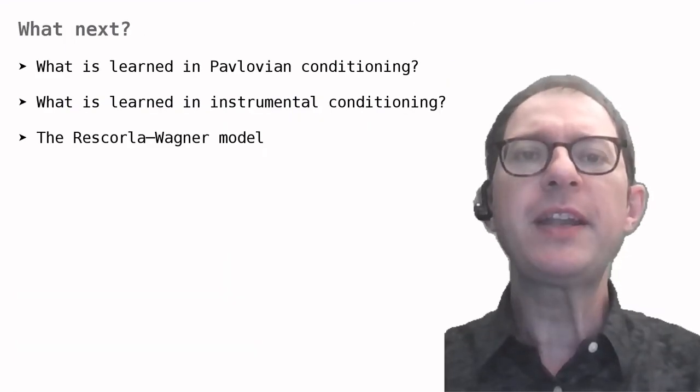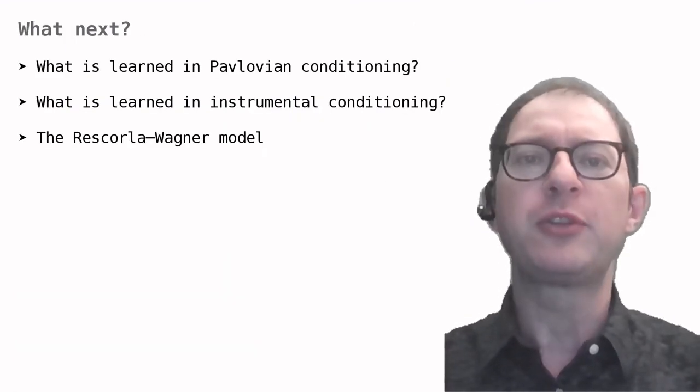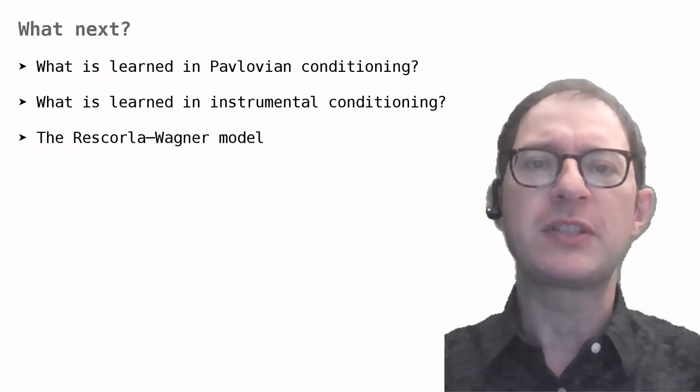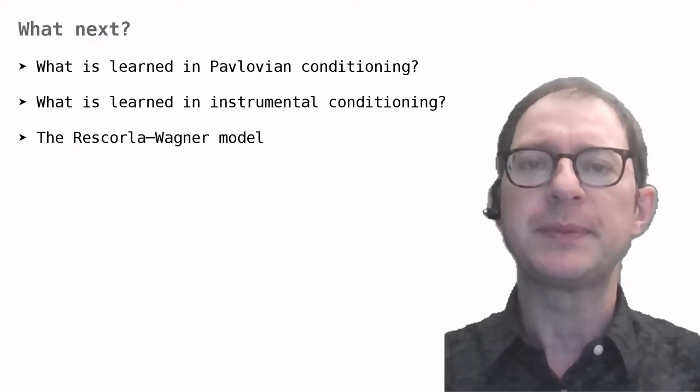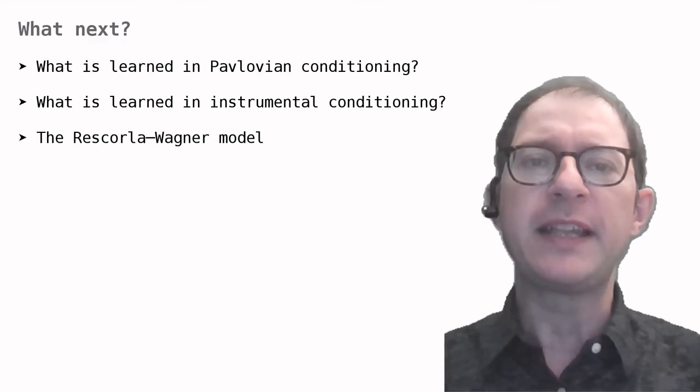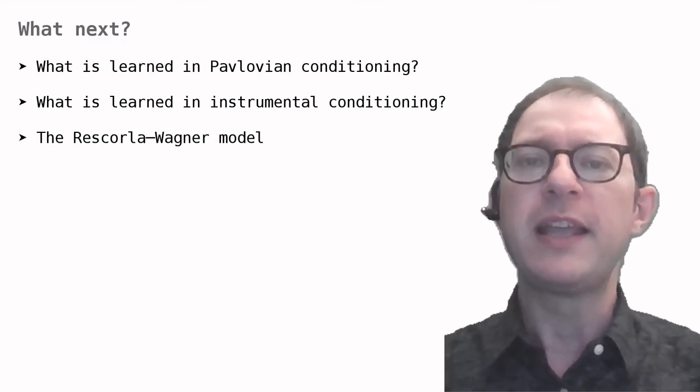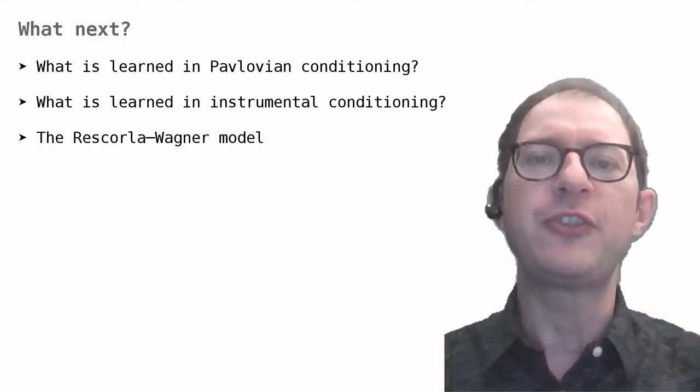In summary, we have learned that stimuli can come through conditioning to inhibit behavior. Moreover, when this happens, they can inhibit behavior in a variety of situations, not only in the presence of the same stimuli where the inhibition was learned. As for other findings that we are looking at in our lessons, we will see an explanation of how inhibition learning may work in the coming lessons on the Rescorla-Wagner model of conditioning.